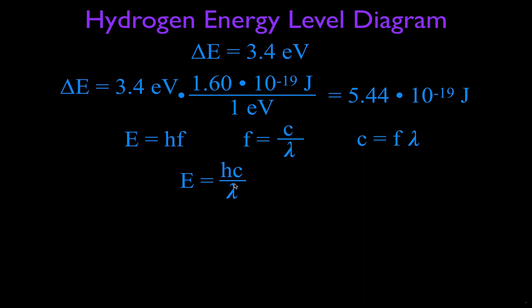And I want to know the wavelength, so then I'm going to solve this equation for the wavelength. And that would be Planck's constant times the speed of light divided by this energy. Please remember that the energy here has to be in joules. You can't just simply use this 3.4 electron volt. You first have to convert to joules.